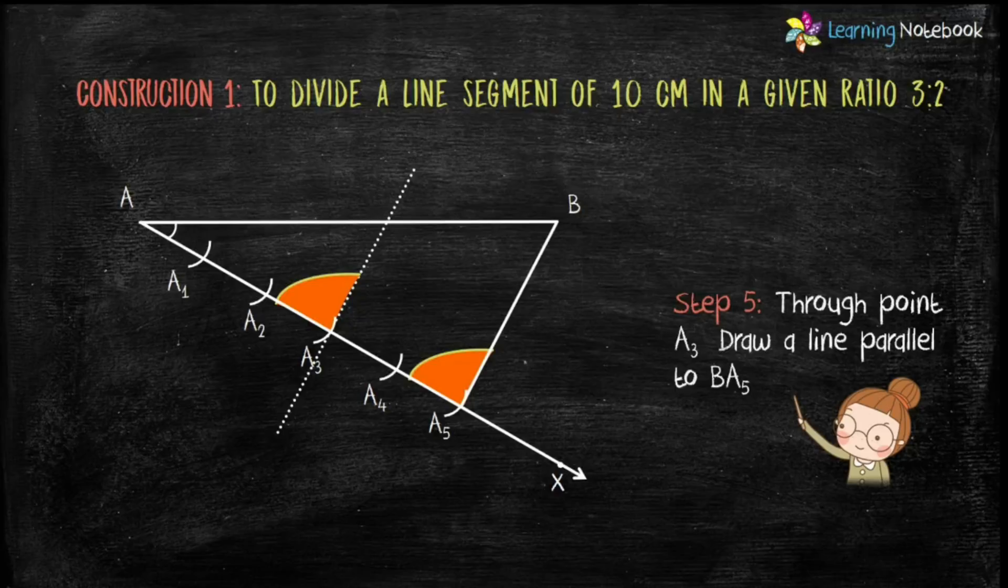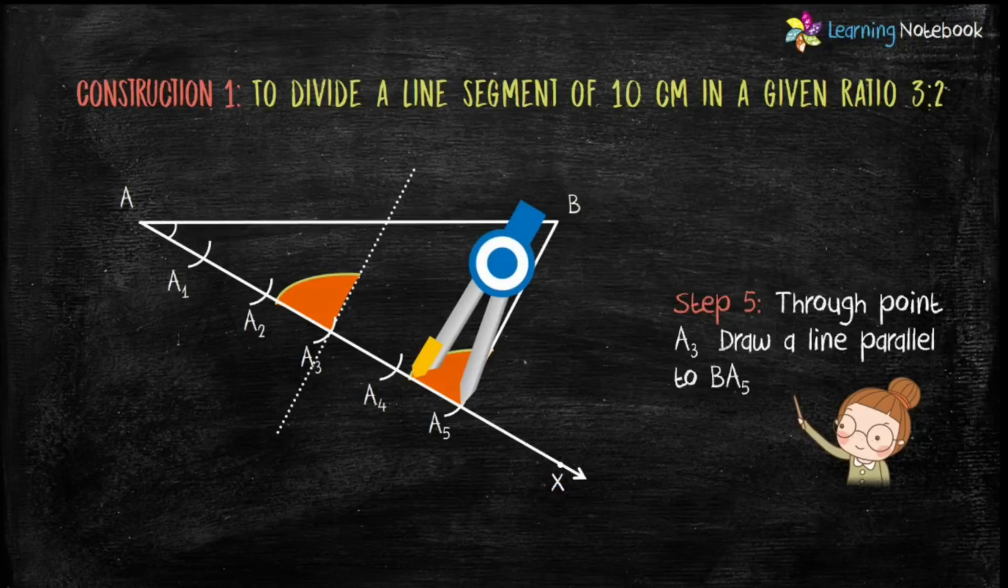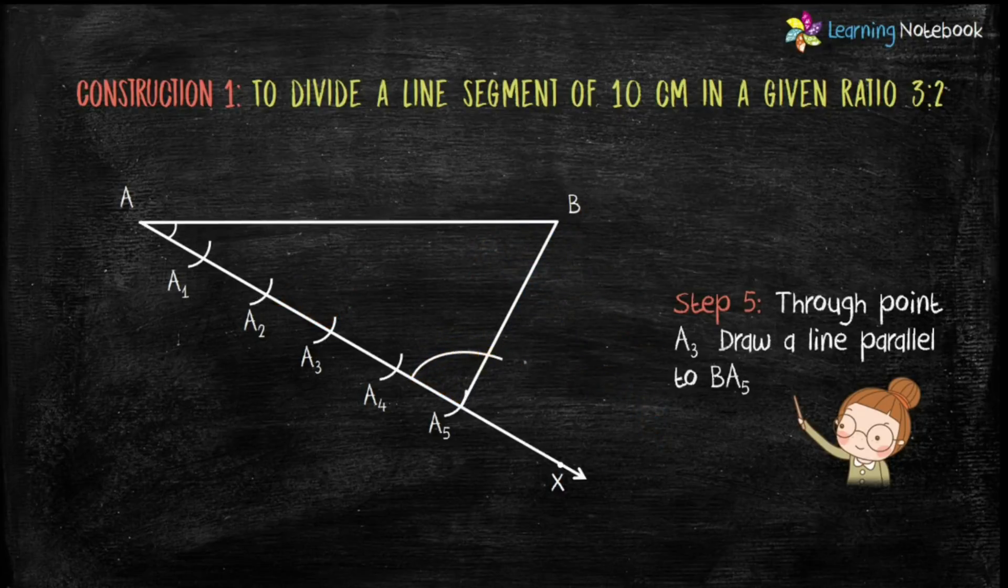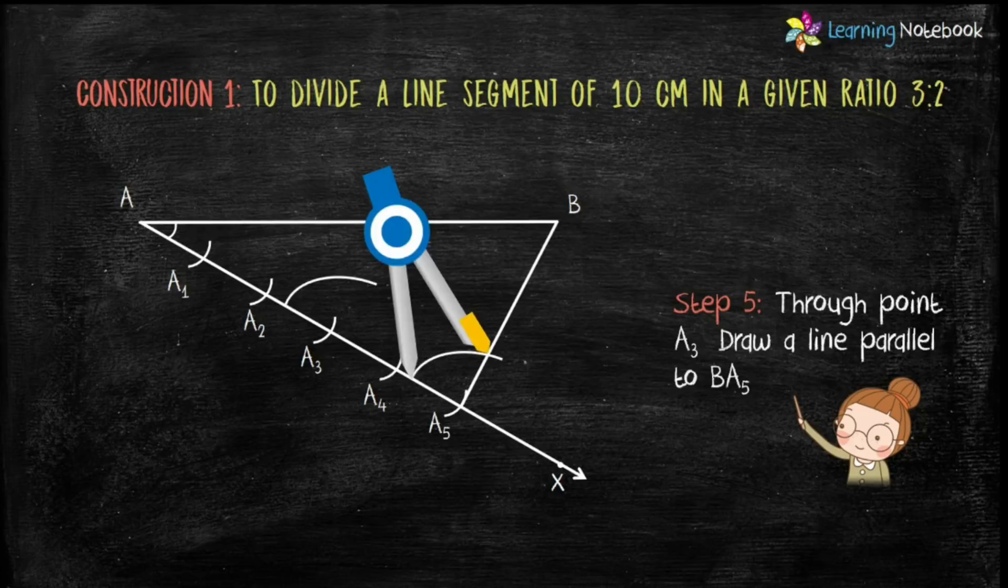First, draw an arc from point A₅. Keeping the same radius, draw an arc from point A₃. Now come back to arc A₅. Place the compass on one end and open it to measure the angle at A₅.